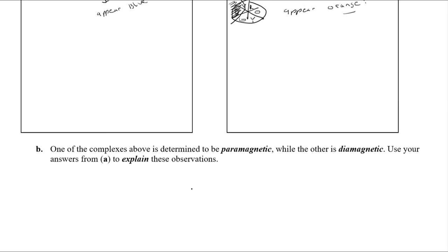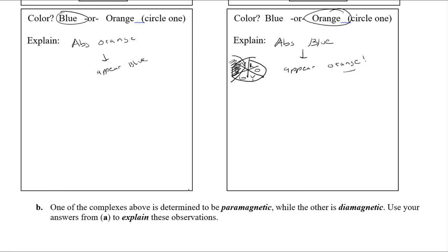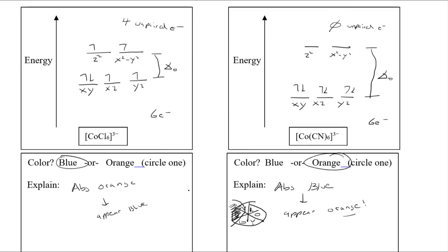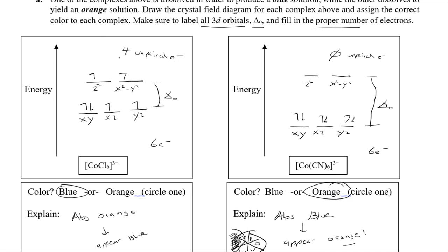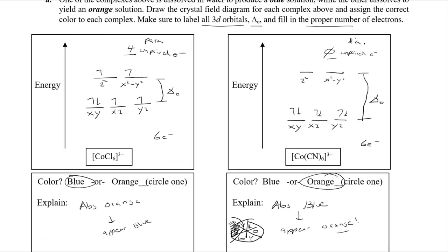For the paramagnetism question: paramagnetic means at least one unpaired electron; diamagnetic means zero unpaired electrons. Looking back at the diagrams: the chloro complex has four unpaired electrons — it is paramagnetic. The cyano complex has zero unpaired electrons — it is diamagnetic. Homework grades have been improving, which is great. Come to the Friday review session for pizza and questions, and office hours will be available to help you prepare for the first exam.